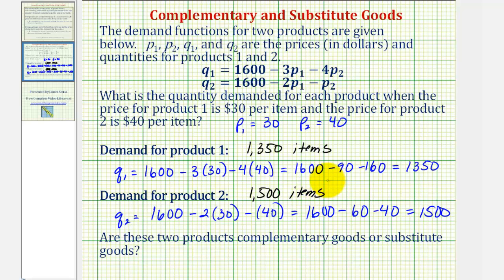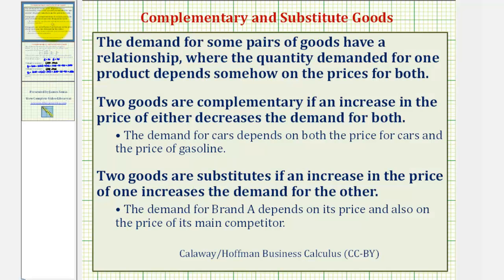For the last question, we're asked: are these two products complementary goods or substitute goods? Let's review what this means. The demand for some pairs of goods have a relationship where the quantity demanded for one product depends somehow on the price for both.